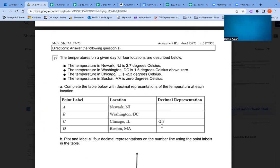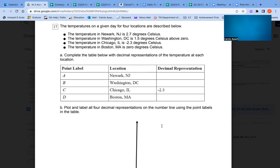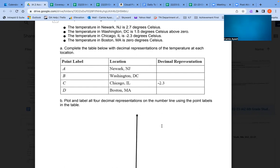Number 17: The temperatures on a given day for four locations are described below. The temperature in Newark, New Jersey is 2.7 degrees Celsius. The temperature in Washington, DC is 1.5 degrees Celsius above zero. The temperature in Chicago, Illinois is negative 2.3 degrees Celsius. The temperature in Boston, Massachusetts is zero degrees Celsius. Part A: Complete the table below with decimal representations of the temperature at each location.